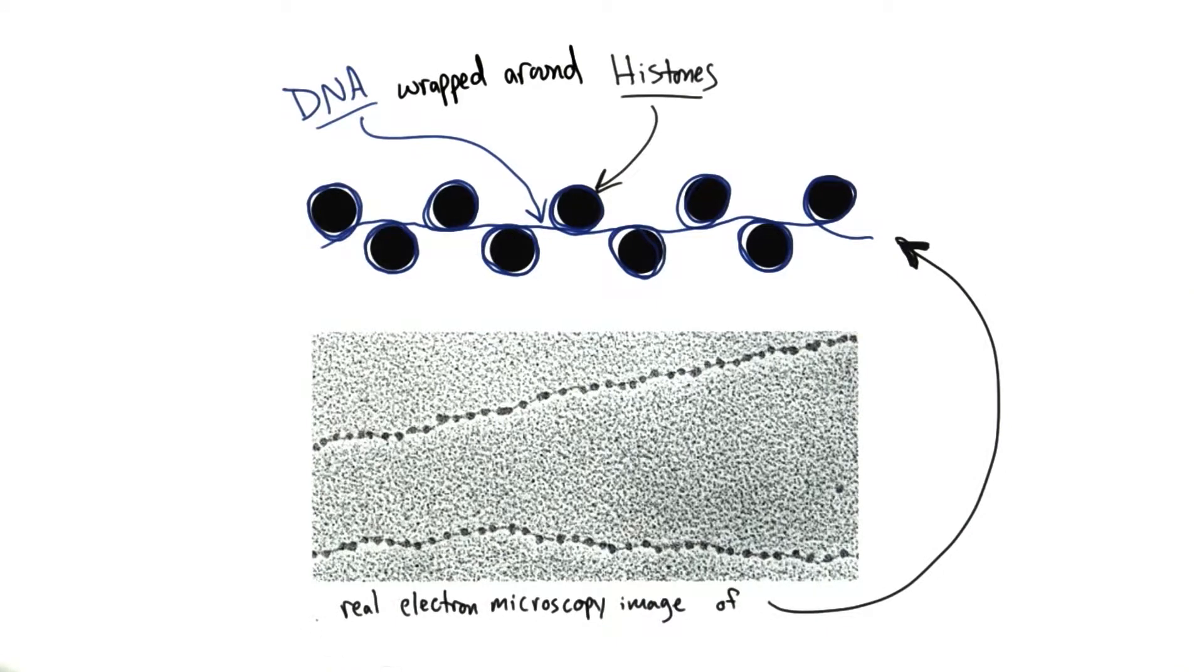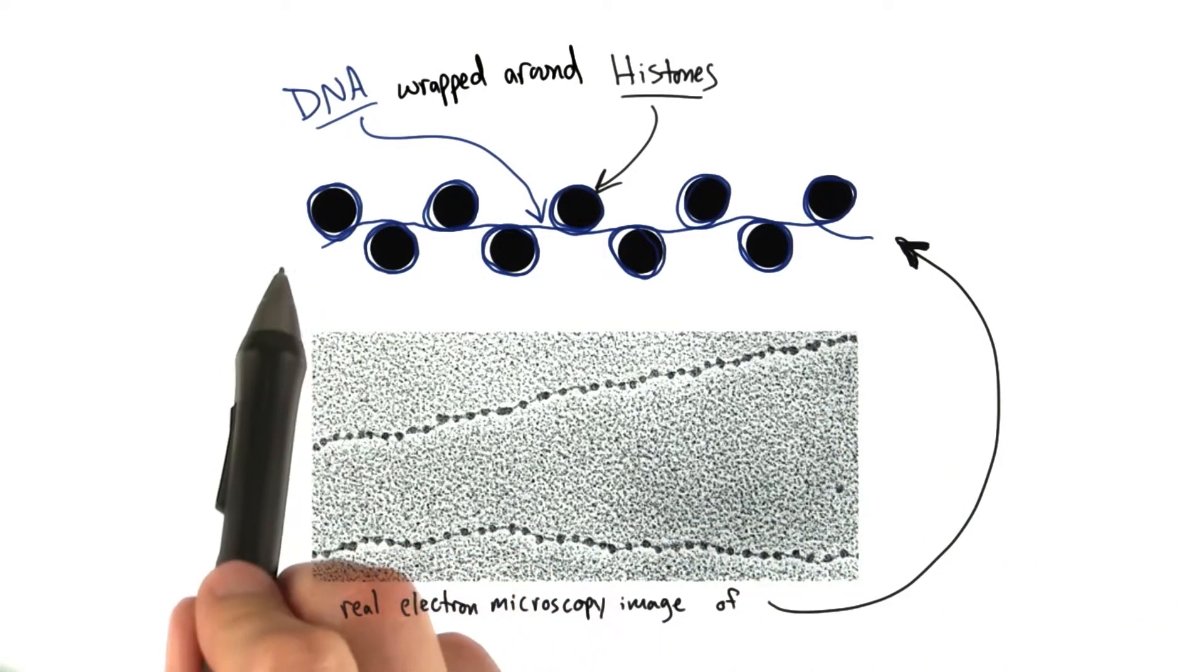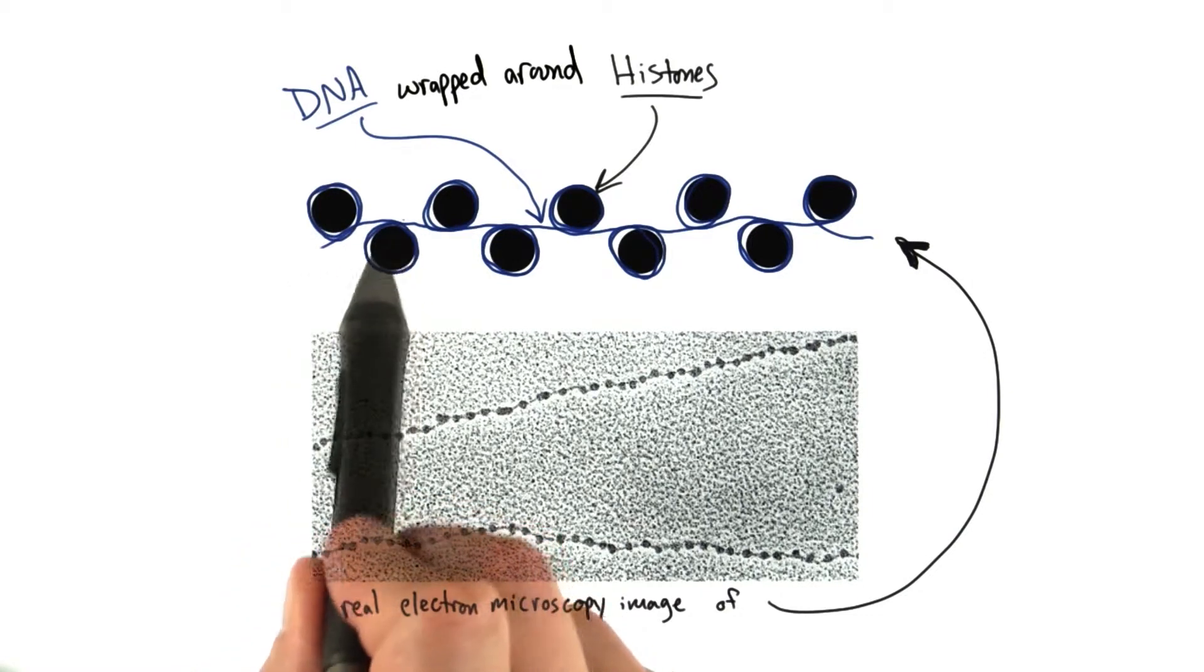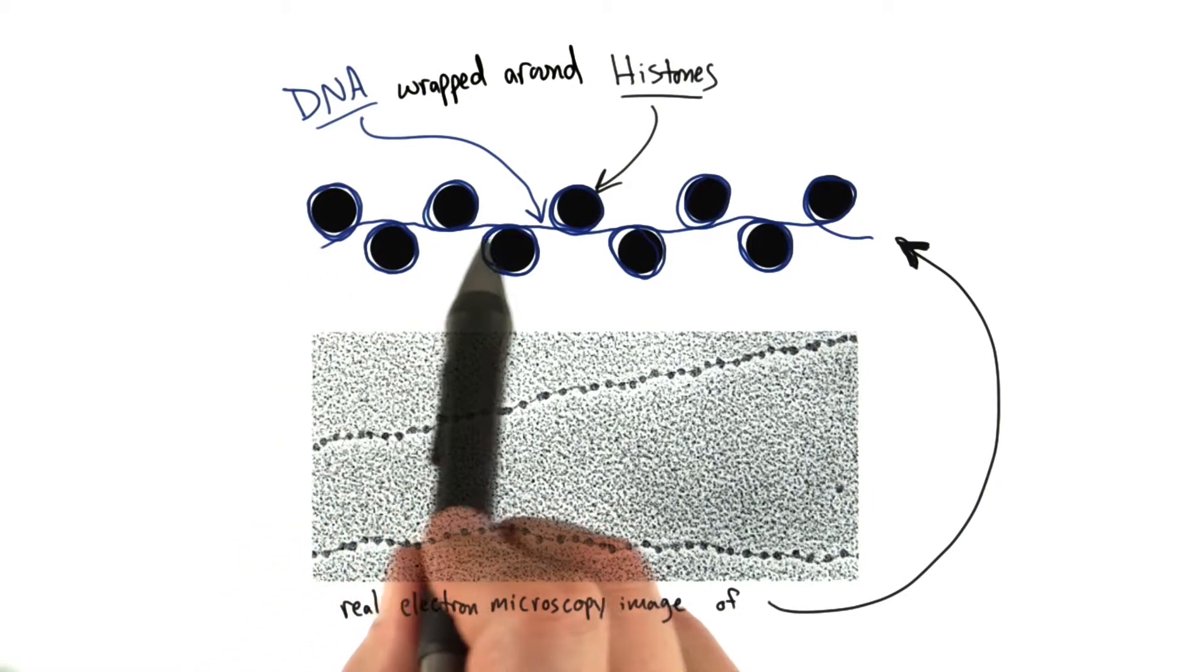Here's an example of a real electron microscopy picture taken of this DNA beads on a string structure. Just like you can see in the cartoon up here, wrapped around these histone proteins is the DNA.